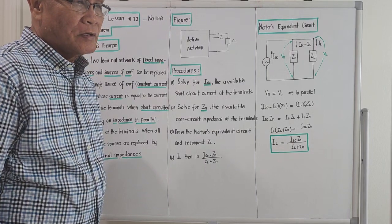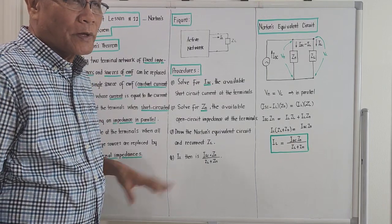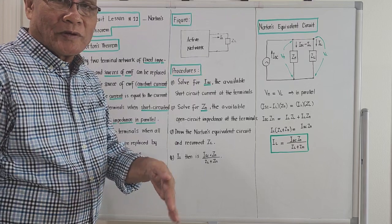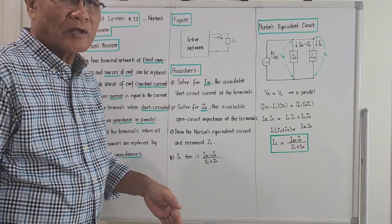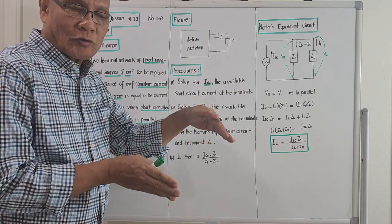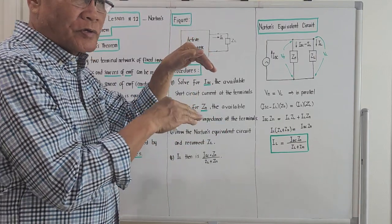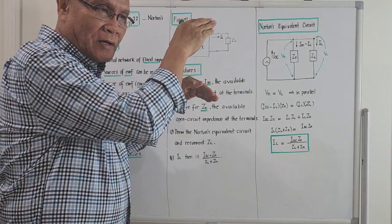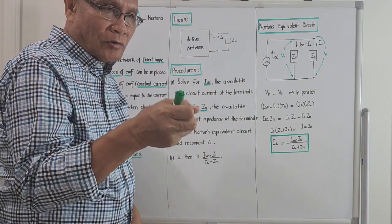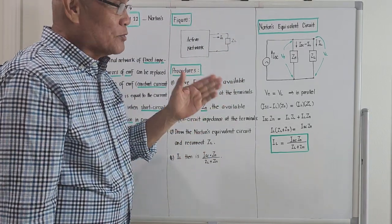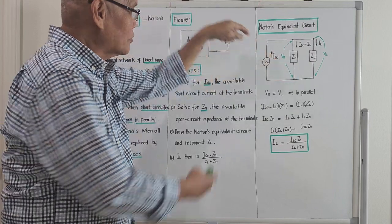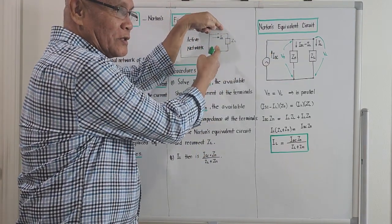Norton's Theorem is one of the advanced solutions on how to compute the current of the load, if that load is connected to the terminal of an active network. The last time around, I discussed Thevenin's Theorem, which is the so-called constant voltage source, where the equivalent of an active network is a constant voltage source in series with the impedance across the terminals. But for Norton's Theorem, what comes out is a constant current source in parallel with the impedance across the terminals.